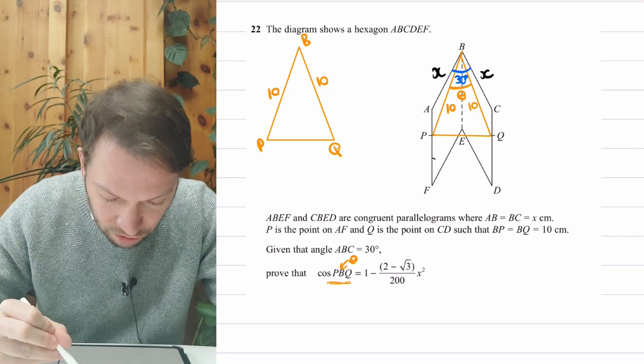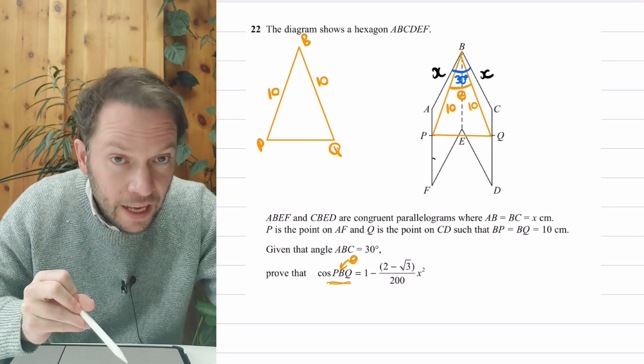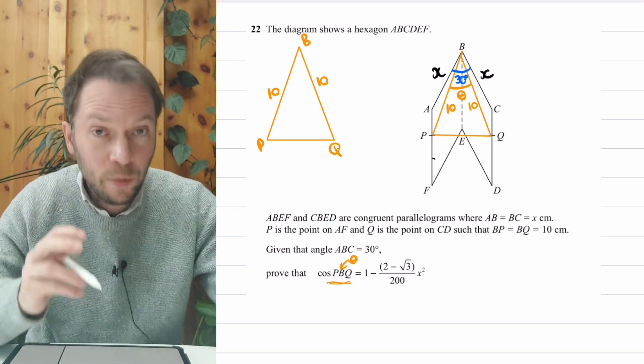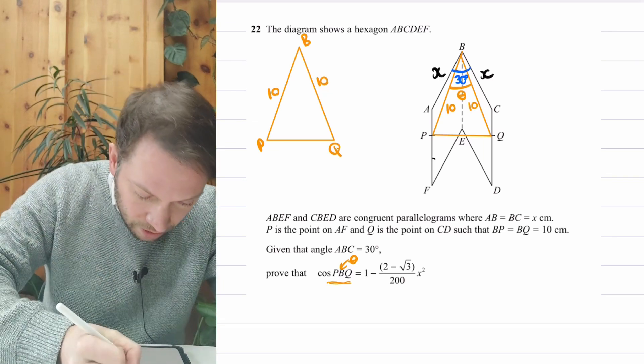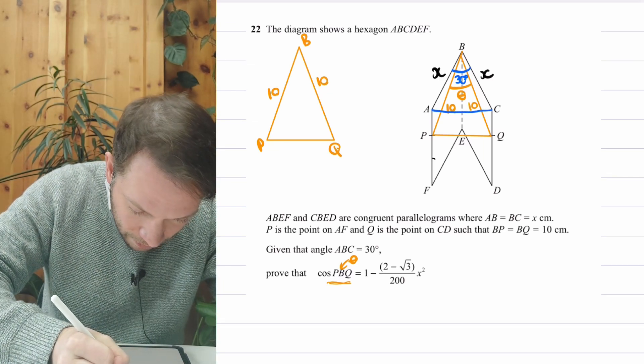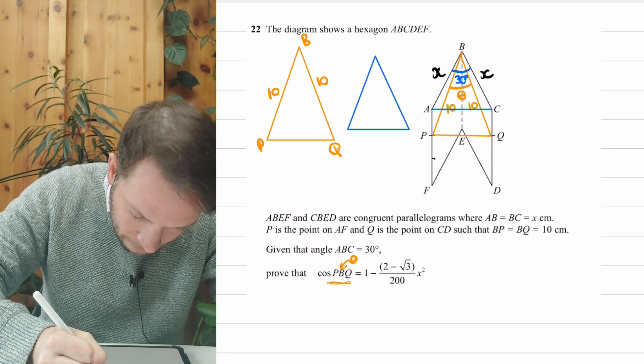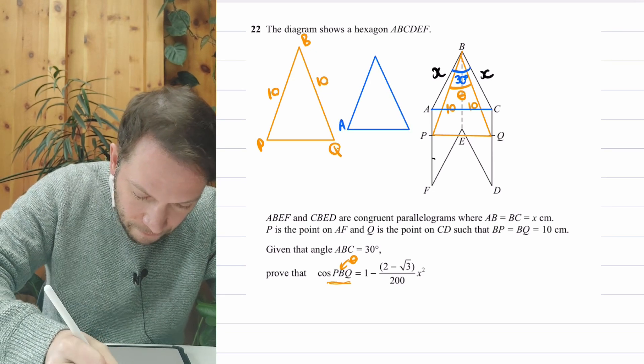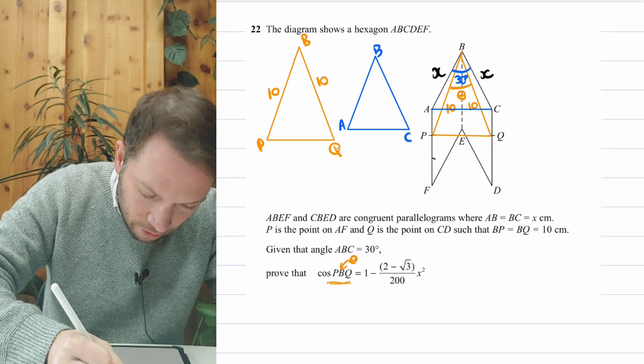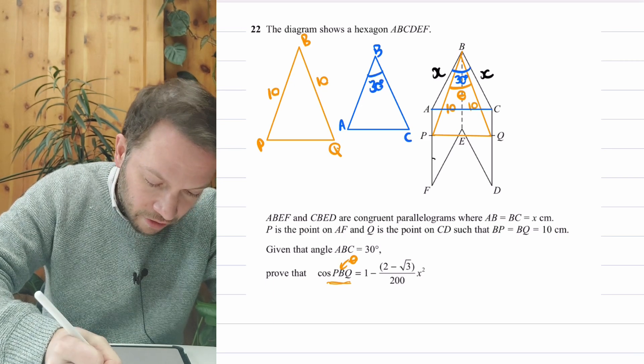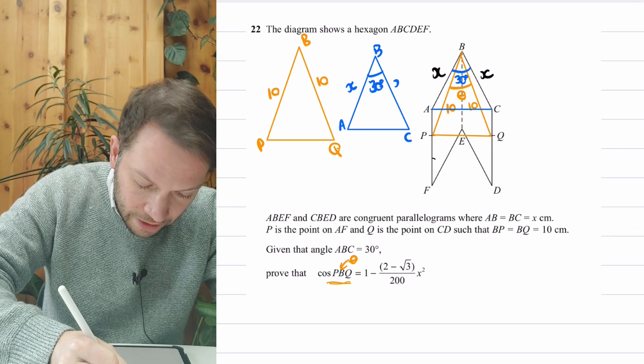Then we've also got this second triangle. We can see that AB is X, BC is X. And we've got the angle ABC. So if I put a line here, we've got the second triangle, ABC. And we've got that this is 30 degrees. And we've got that's X and that's X.